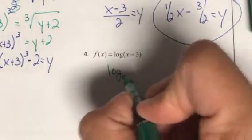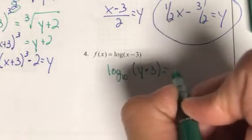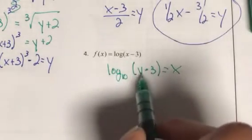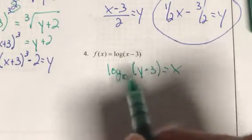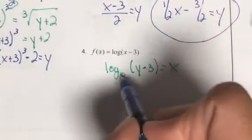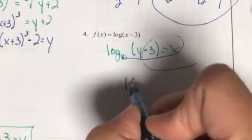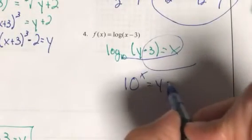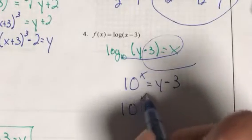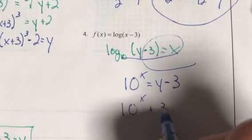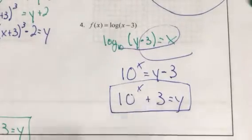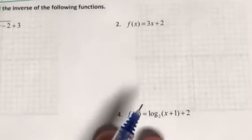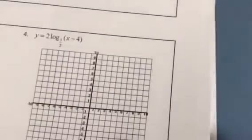For the logarithm inverse: switch x and y. There's an understood base of 10. The log is already isolated, so convert to exponential form: 10^x = y - 3. Add 3 to get y = 10^x + 3. In graphing terms, this means graph 10^x and shift everything up 3.